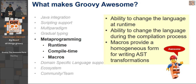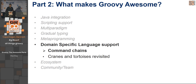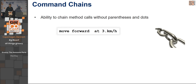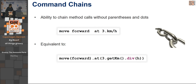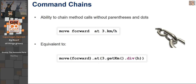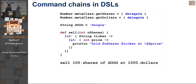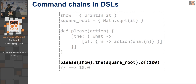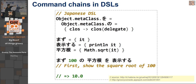The metaprogramming pillar is one of the really powerful features. If you combine all those things together and add in some command chains — 'move forward at 3.kilometers.div.h' is what the actual line above actually gets parsed into by the Groovy compiler. That's actual code. If you can combine this with the scripting support and all the other things we've been talking about, there's a few examples here of doing DSLs.